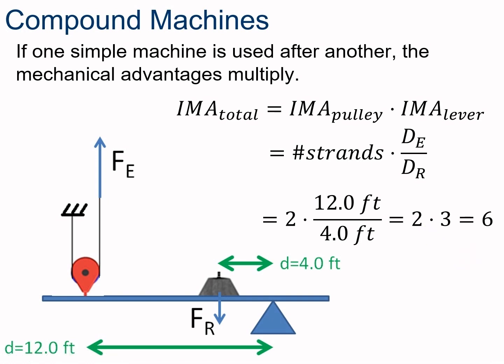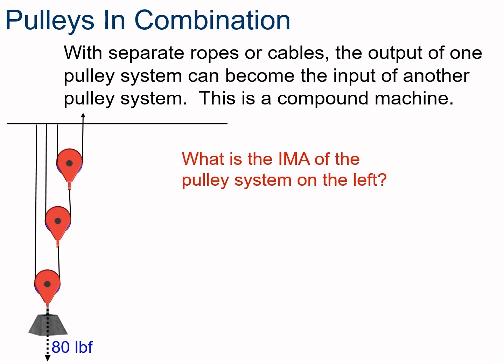Let's look at pulleys in combination — the main reason we introduced compound machines. Here we have three separate movable pulleys. Each pulley is supported by two strands: one strand is connected to the beam above, and each strand on the right is connected to another movable pulley. How would we calculate the IMA of this system? Pause the video and think about it.